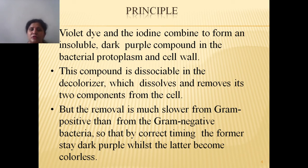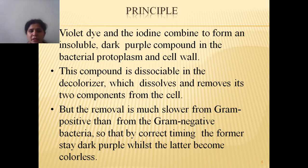In addition to that, we also make use of gram's iodine, which acts as a mordant. This crystal violet and iodine combine to form an insoluble dark purple compound — the crystal violet iodine (CVI) complex — in the bacterial protoplasm and cell wall. This compound is dissociable when we apply decolorizers, which dissolve the CVI complex and remove it from the cell.